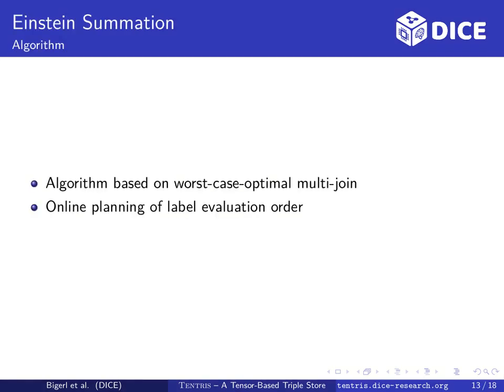For the Einstein summation algorithm we adopted a worst-case optimal multi-join algorithm which was developed for trie-based indices. Our Einstein summation algorithm selects and extracts a label from the Einstein notation, resolves it and calls itself recursively until no labels are left. To resolve a label it relates the dimensions of the operands subscripted with the extracted label. For each common key part which maps all related positions to non-zero slices a recursive call is invoked with the resulting sliced operands.